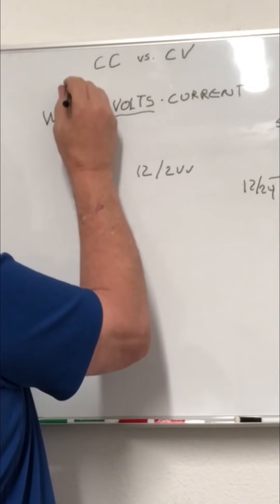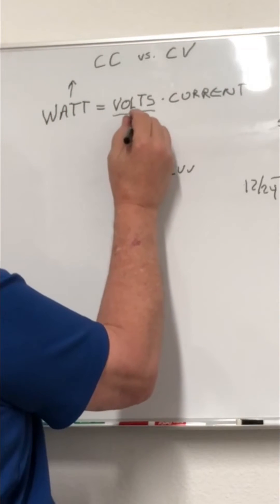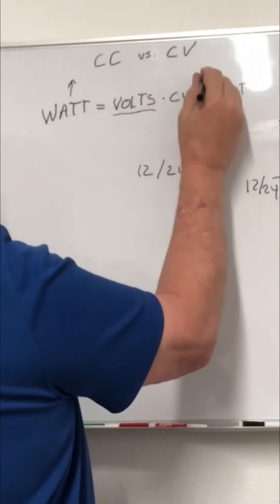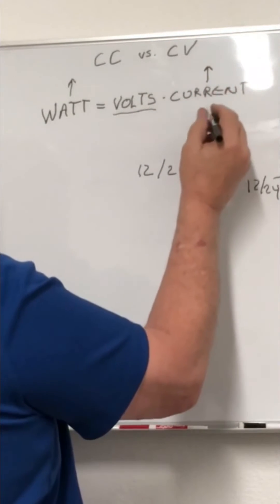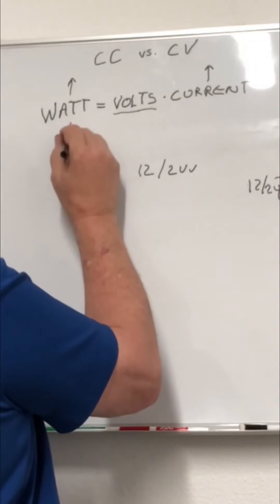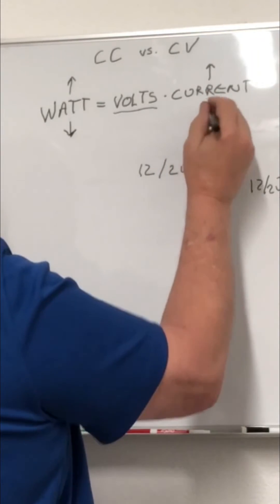So let's say your wattage goes up, but you're keeping your voltage at the same level. Then your current has to go up. And vice versa, if your wattage goes down, then your current has to go down.